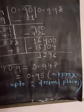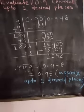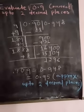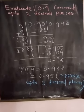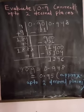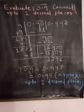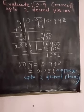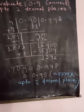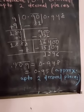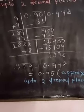You have to continue the division up to 3 decimal places. Because you have to find the square root of the decimal number up to 2 decimal places, you have to continue your division up to one more place, that is 2 plus 1 equals 3 decimal places.